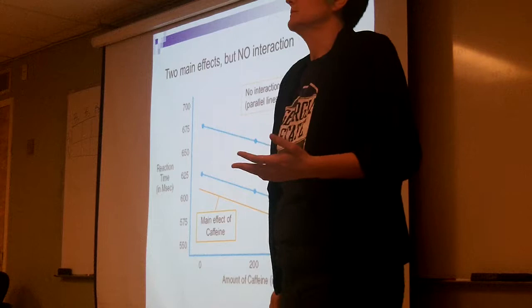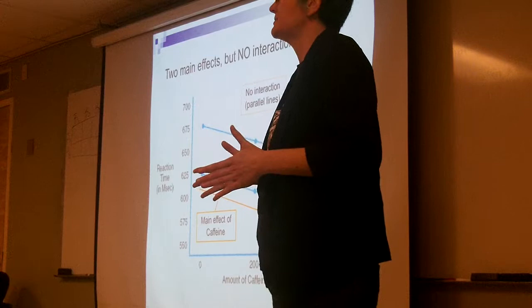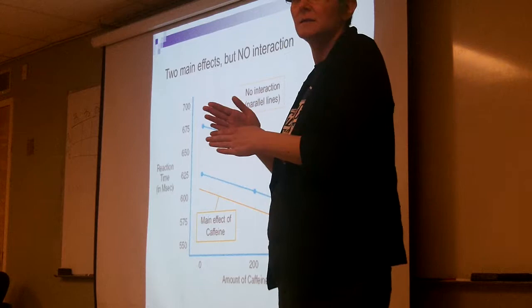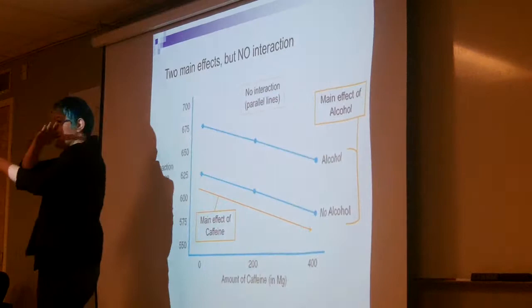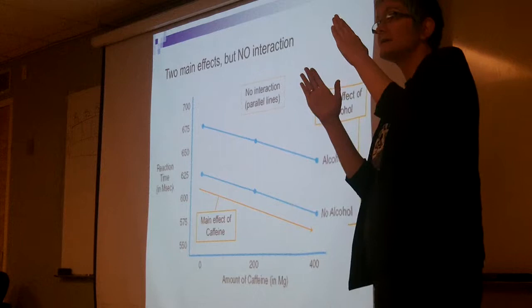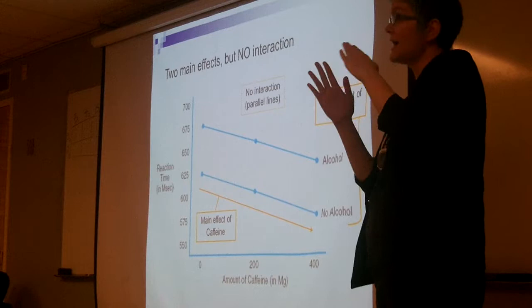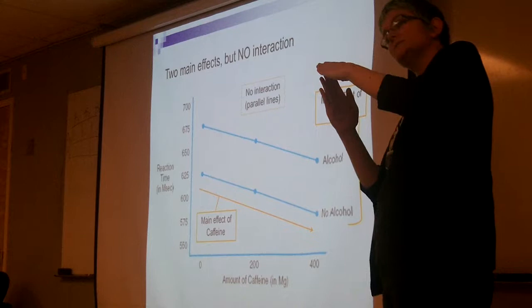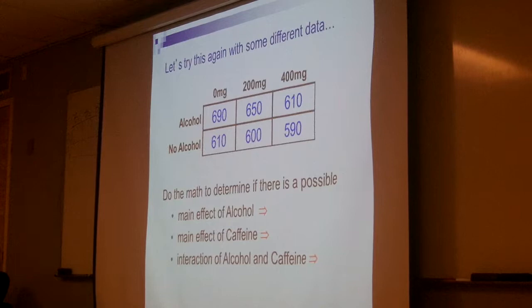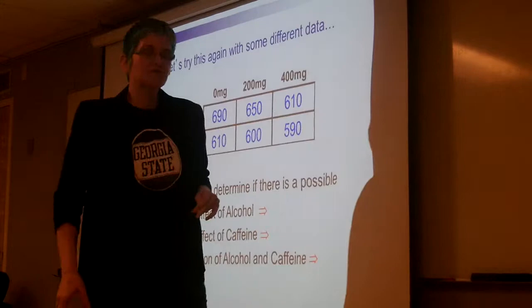When lines are parallel in a line graph, there is no interaction. The more the lines point toward each other or converge, the more likely an interaction. When lines actually cross over and intersect, that almost guarantees an interaction — though it still depends on statistical power. As lines get closer together, the likelihood of an interaction increases. They don't have to cross to have one, but crossing is a very strong indicator.